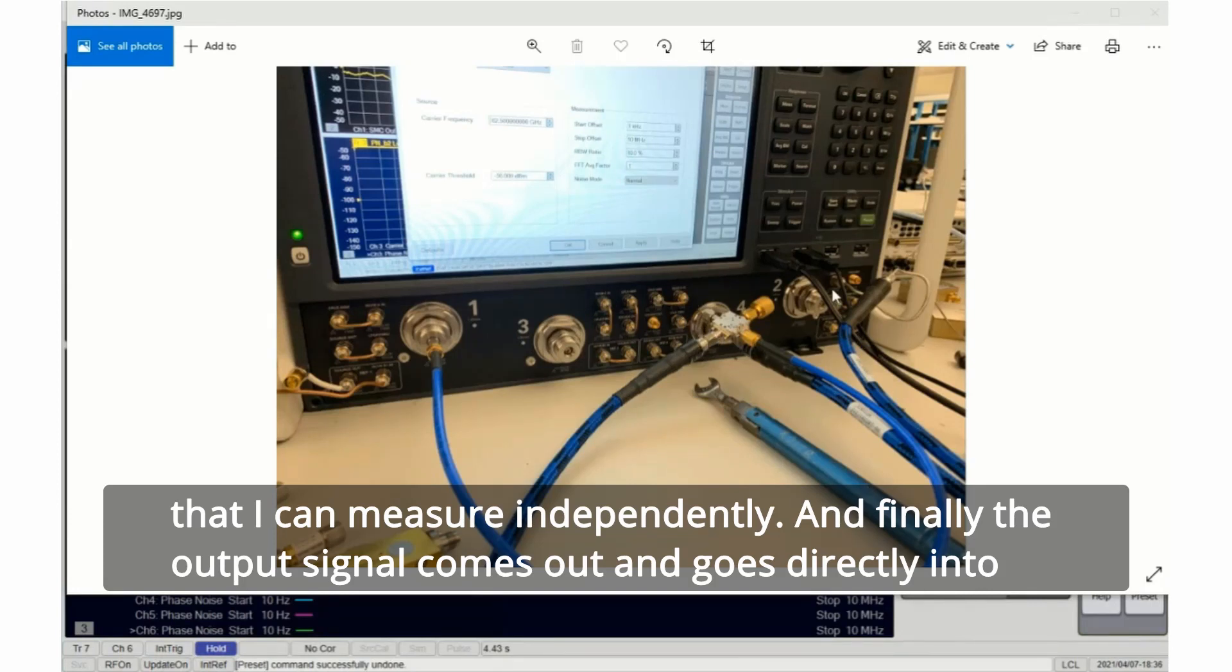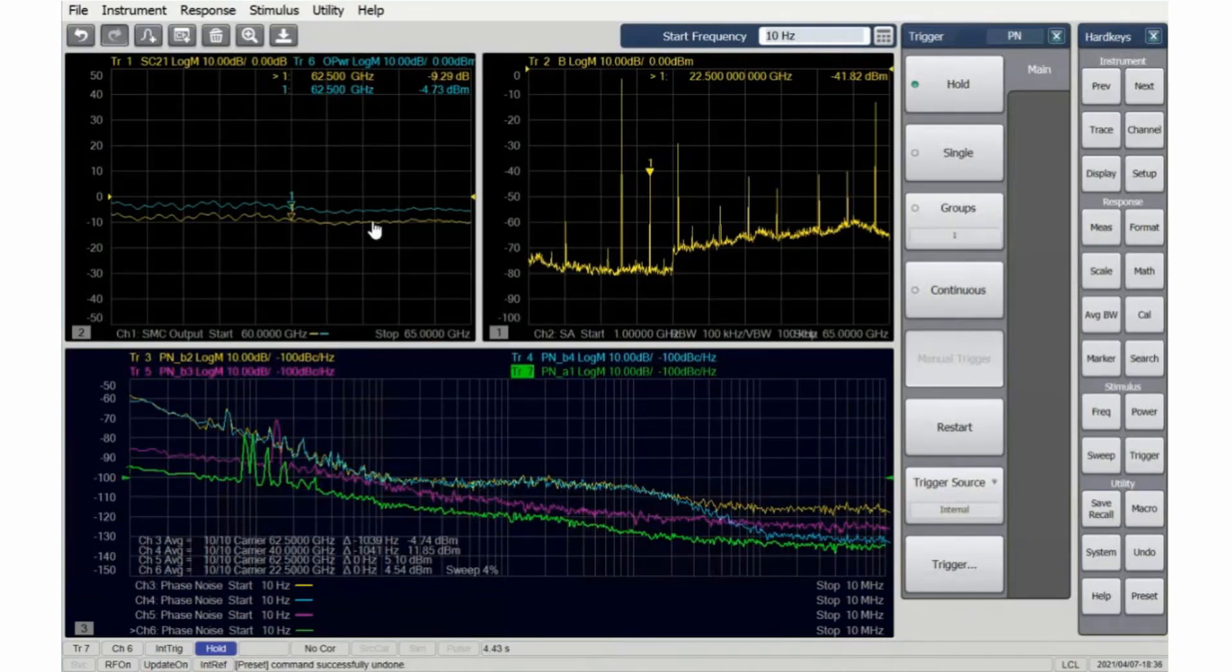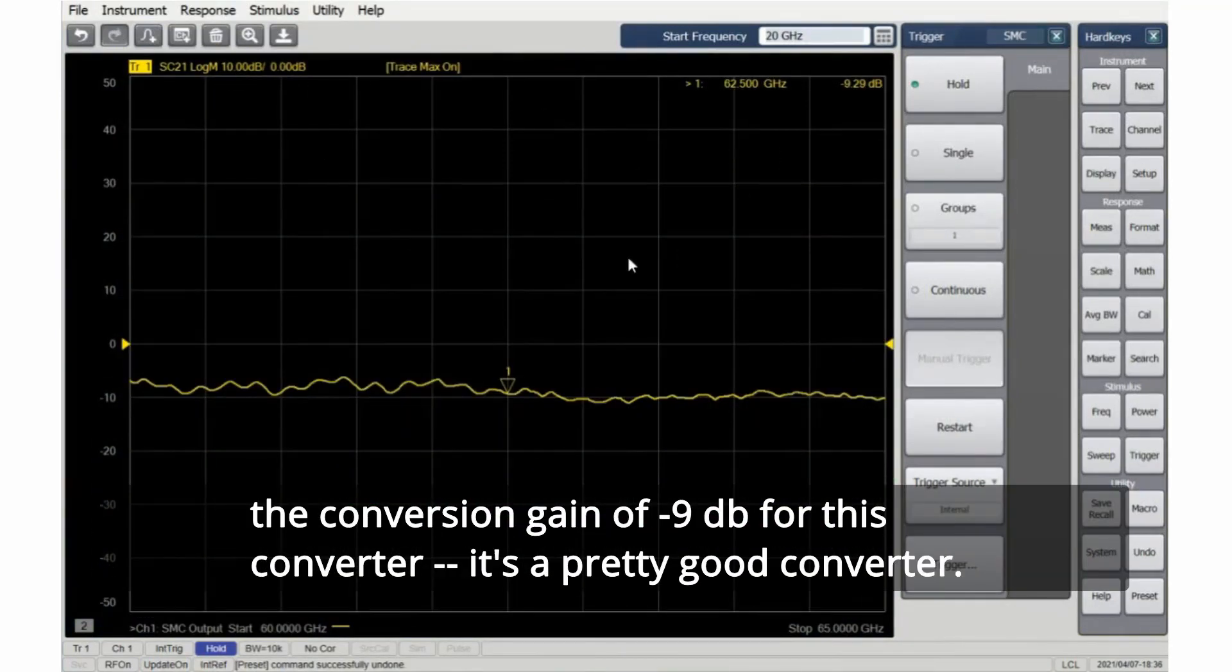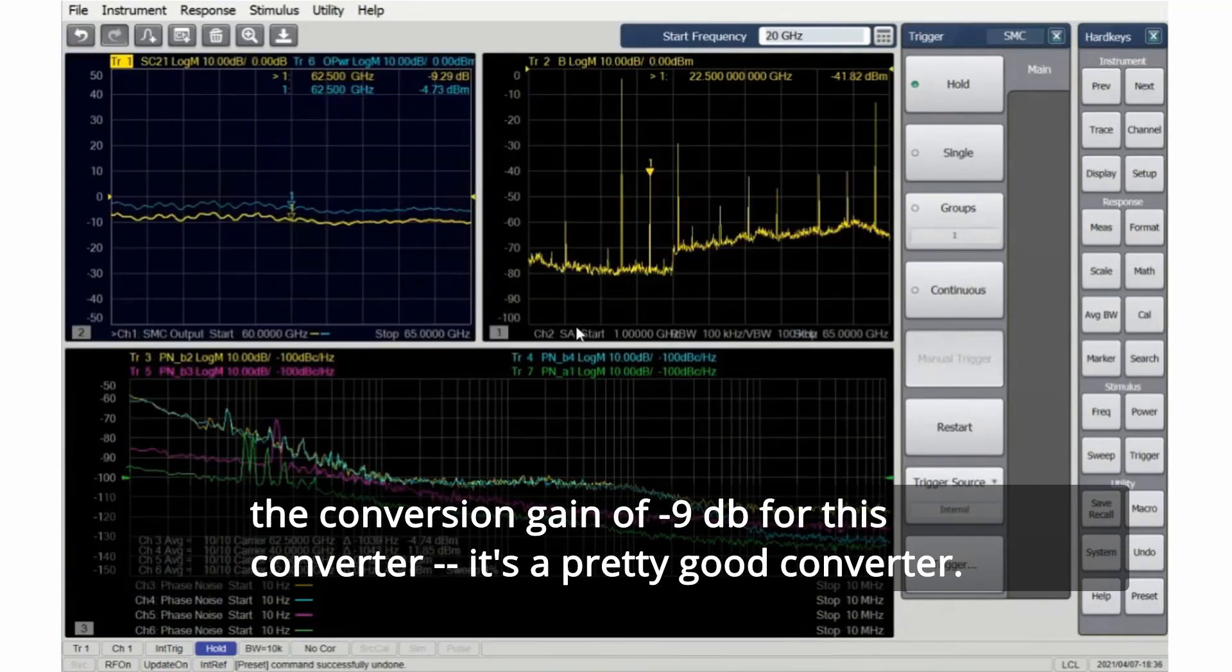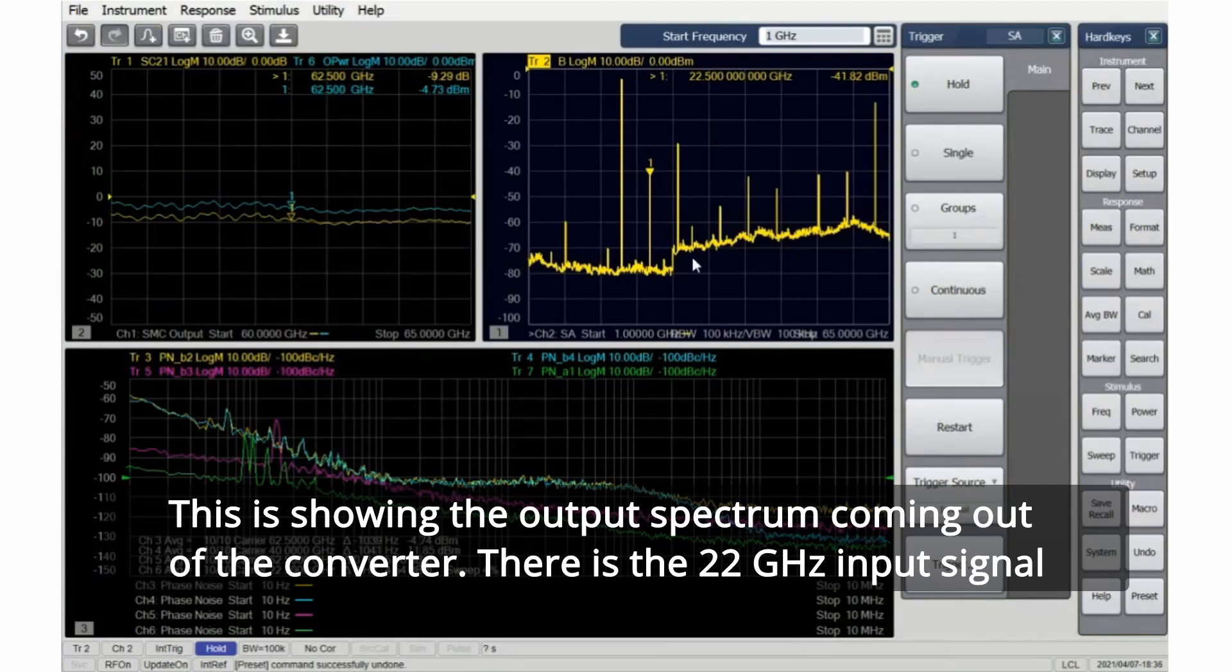Finally, the output signal comes out and goes directly into port 2, so I get my best signal-to-noise. We always want to make the receiver level as high as we can. I did a quick measurement of the conversion gain. This is showing the conversion gain of minus 9 dB for this converter - it's a pretty good converter. This is showing the output spectrum coming out of the converter.